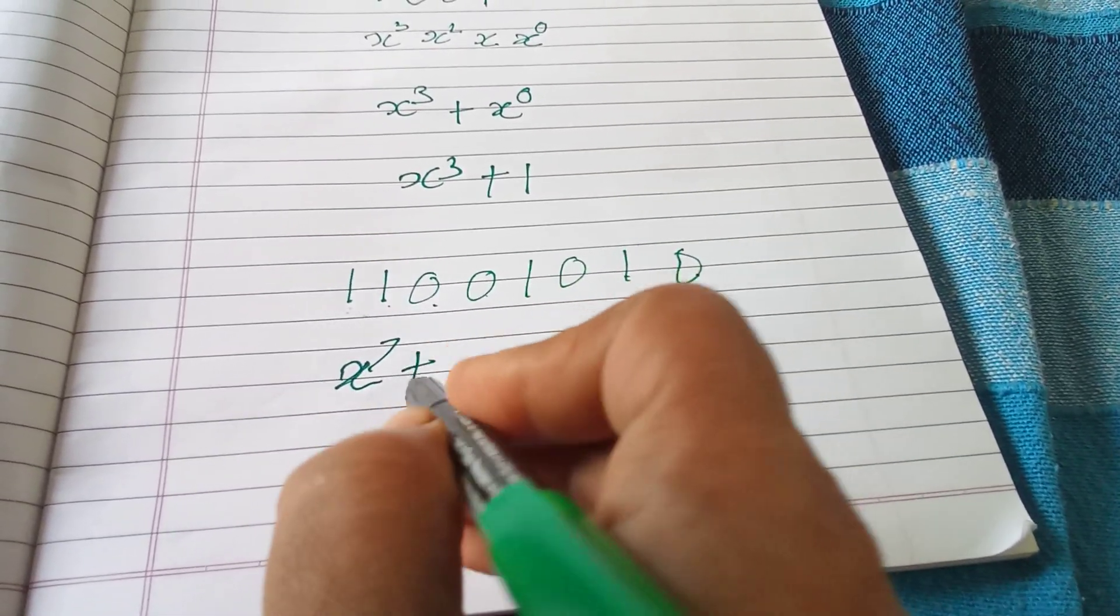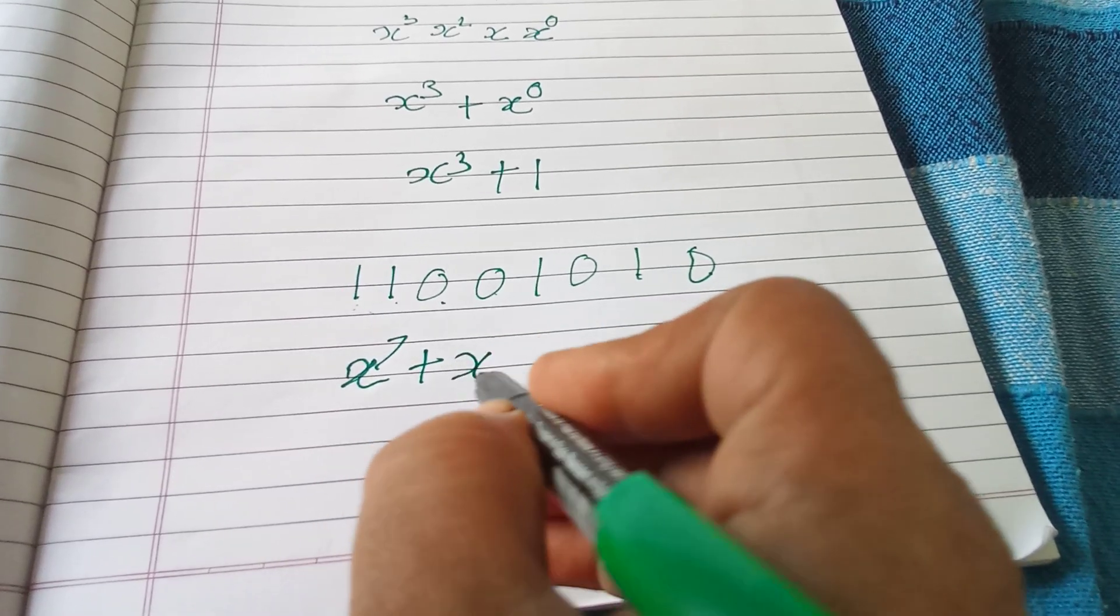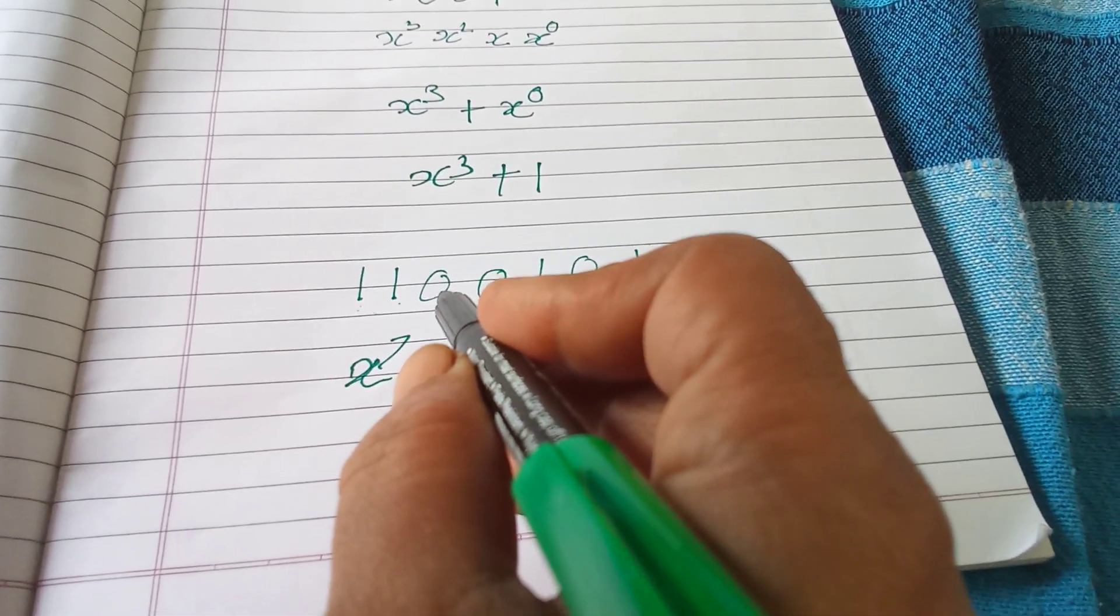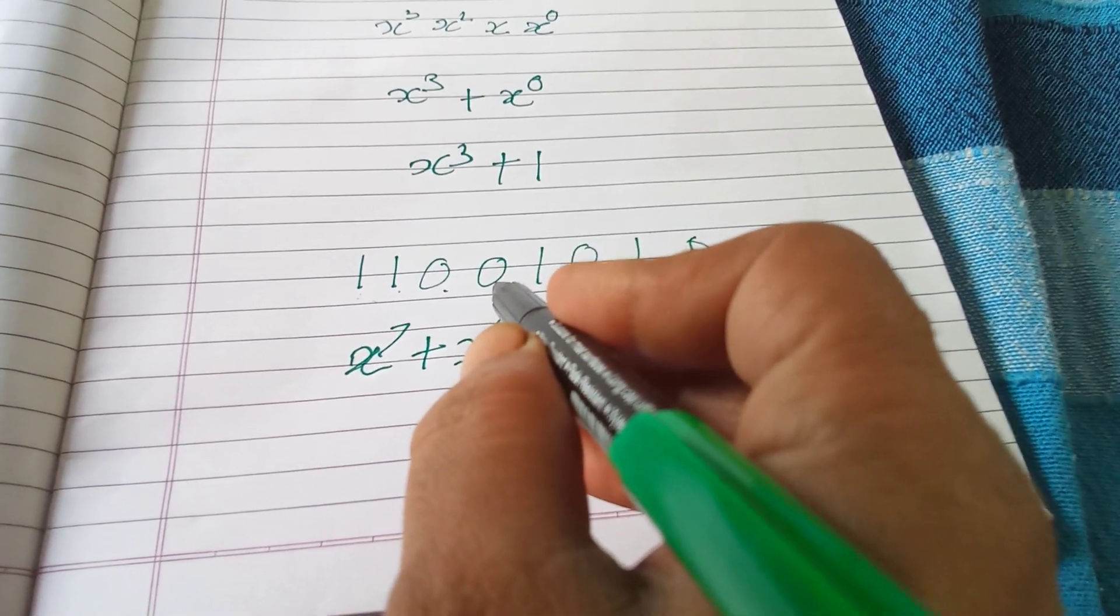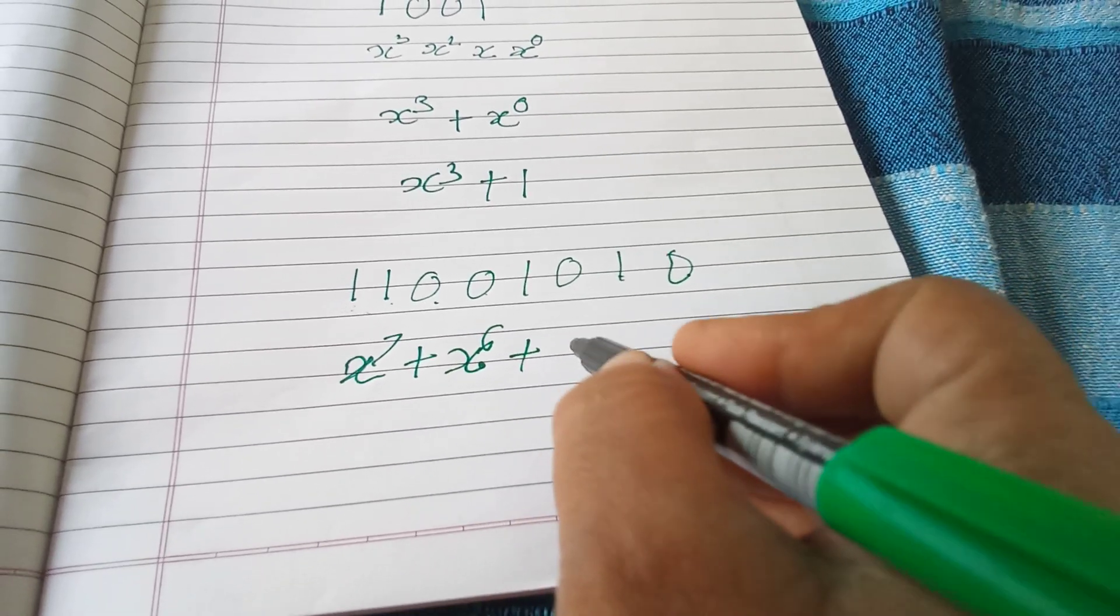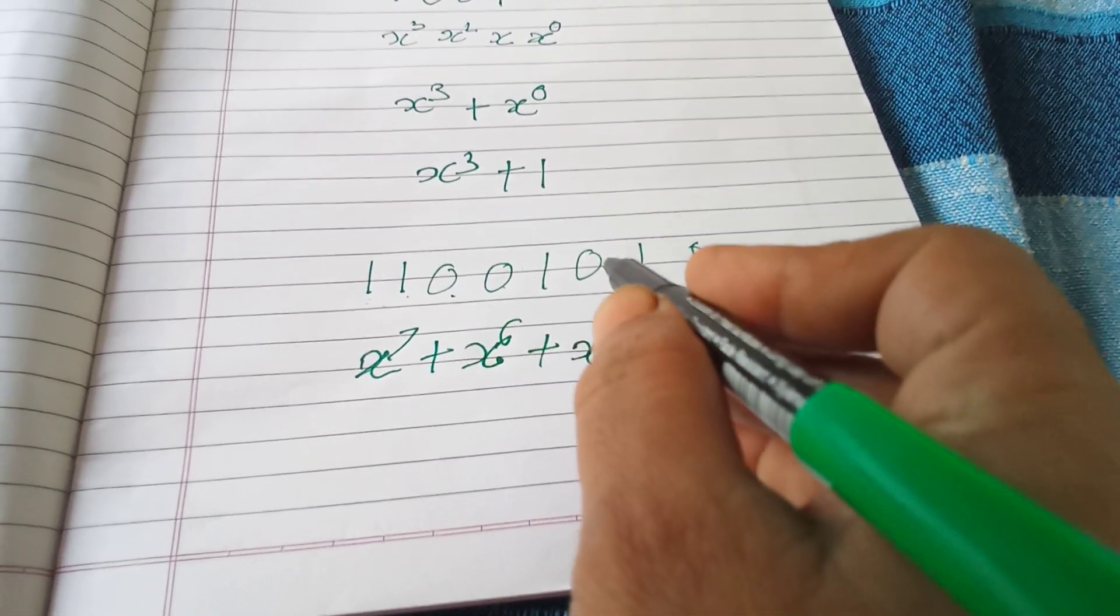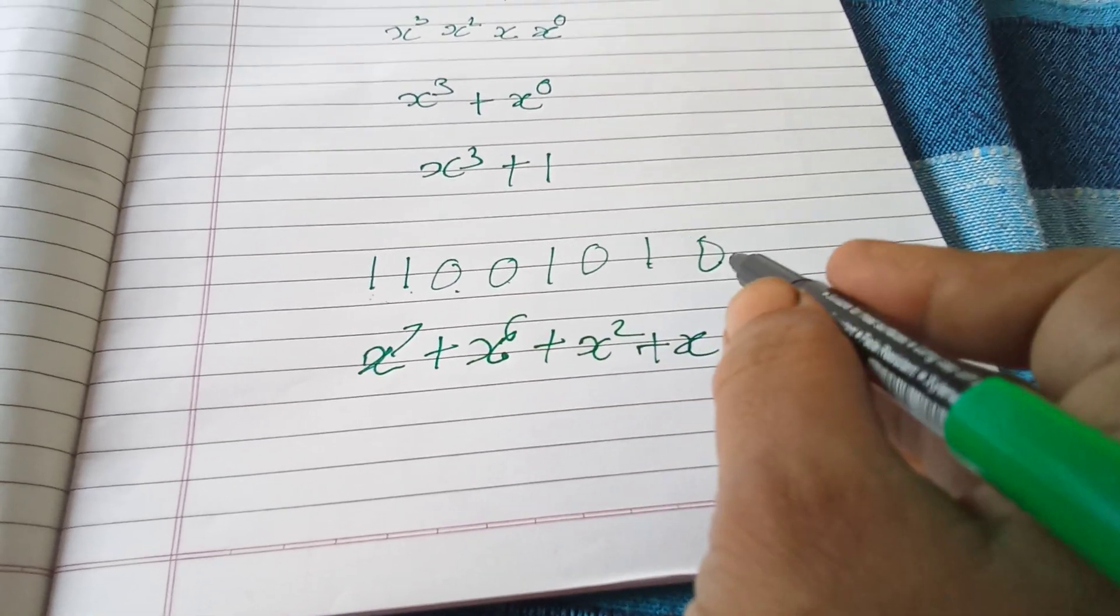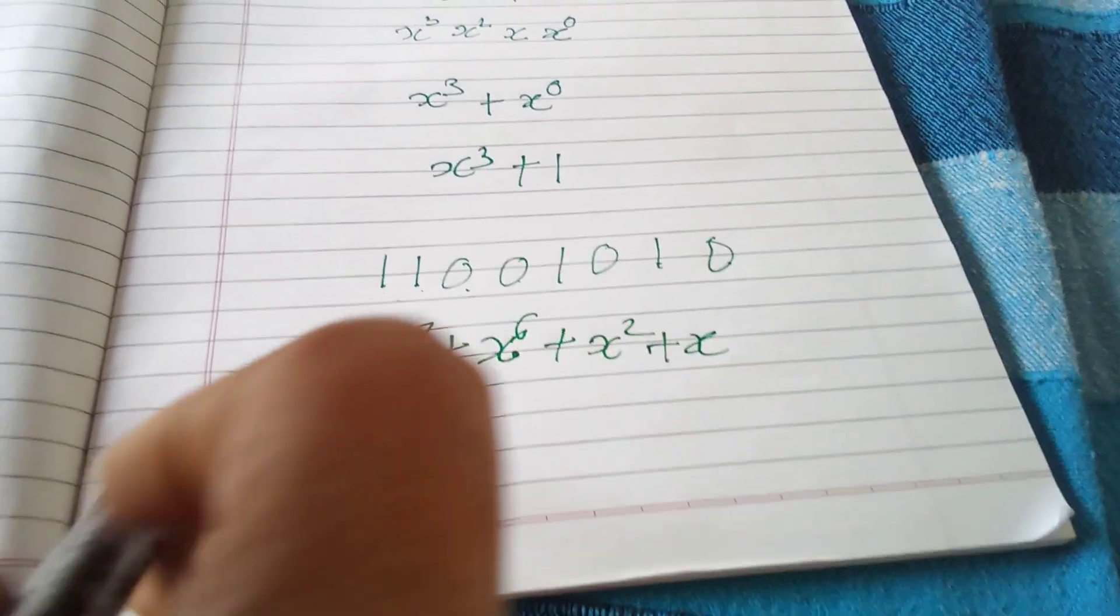Then this corresponds to x⁶, x⁵ you are not going to consider, x⁴ you are not going to consider because it is 0, then x³, x² you are not going to consider, x you will consider, x⁰ you will not consider. So this is the polynomial.